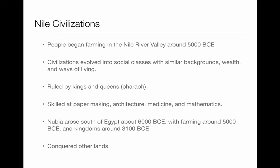This is when we start to see civilizations begin. Our next topic is the Nile — a farming civilization around 5,000 BCE. They started evolving into social classes with similar backgrounds, wealth, and ways of living. In Egypt, along the Nile, you had what was called a pharaoh — think of it like a king and queen, kind of like a monarchy. The Egyptians were skilled at papermaking, architecture, medicine, and mathematics.